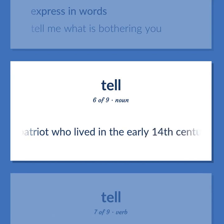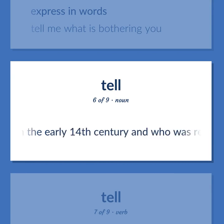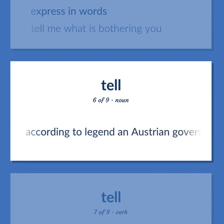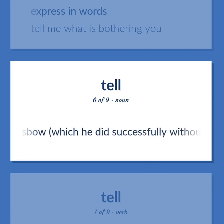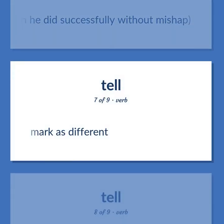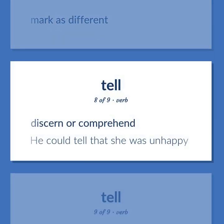TELL: William Tell, a Swiss patriot who lived in the early 14th century, renowned for his skill as an archer. According to legend, an Austrian governor compelled him to shoot an apple from his son's head with his crossbow, which he did successfully without mishap. Mark is different. Discern or comprehend — he could tell that she was unhappy.